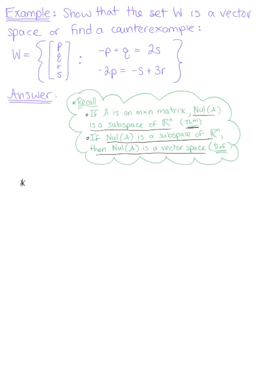The first thing that we want to do is rewrite this set as a homogeneous equation if possible. So we want to rewrite W as a homogeneous equation, as a matrix equation A times vector X equals a 0 vector if possible.